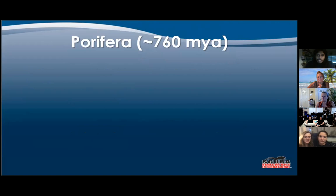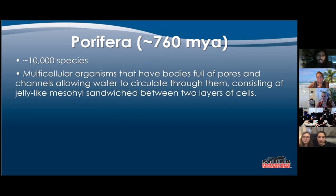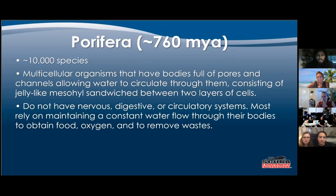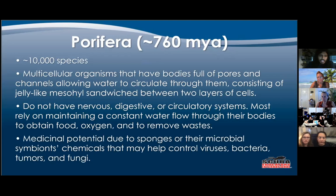We're going to start with Porifera — these are your sponges. There are about 10,000 species. It's a multicellular organism with bodies full of pores and channels allowing water to circulate through them, consisting of a jelly-like mesohyl centered between two layers of cells. They don't have a nervous, digestive, or circulatory system and rely on maintaining a constant water flow to obtain food, oxygen, and remove wastes. They have medicinal potential due to the sponge or its microbial symbionts that may help control viruses, bacteria, tumors, and fungi.